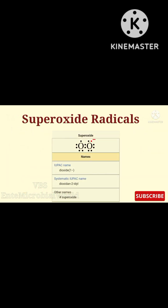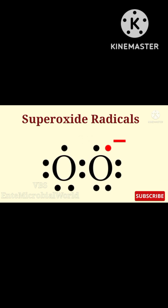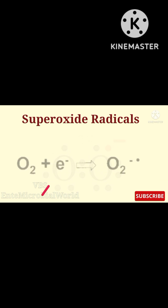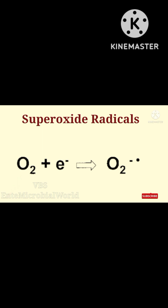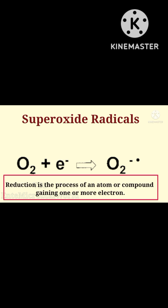Various cellular enzymes catalyze chemical reactions involving molecular oxygen. Some of these reactions can result in addition of a single electron to an oxygen molecule, thereby forming a superoxide radical. In other words, superoxide radicals are produced by the one-electron reduction of molecular oxygen.